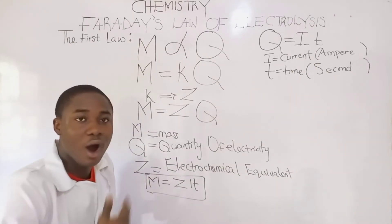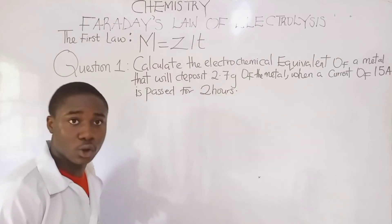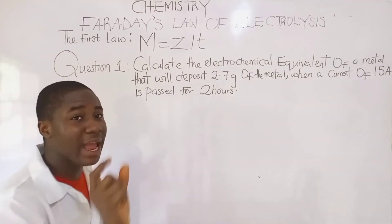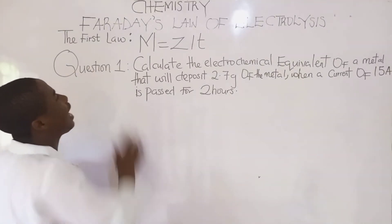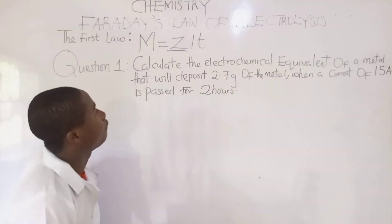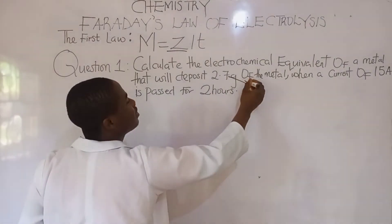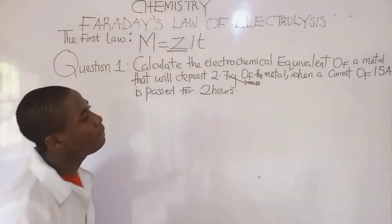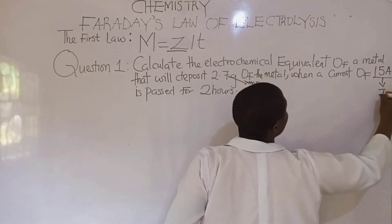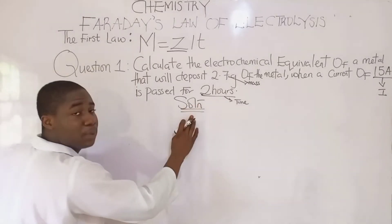In the course of today's video, I'll be solving practice problems that explain this formula. Here is the first question: calculate the electrochemical equivalent of a metal that will deposit 2.7 grams — this is the mass — when a current of 15 amperes — this is I — is passed for 2 hours, whereby this is the time.